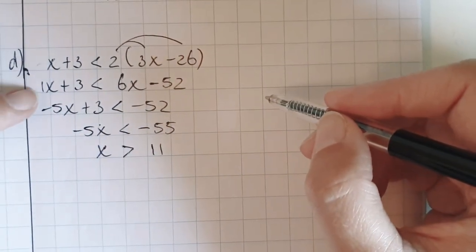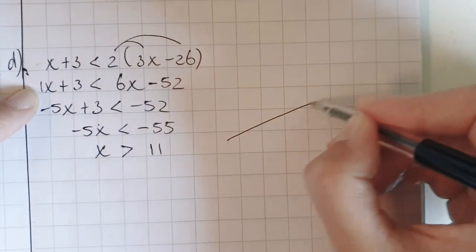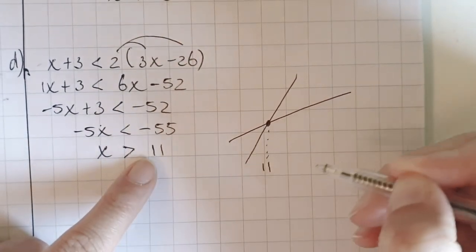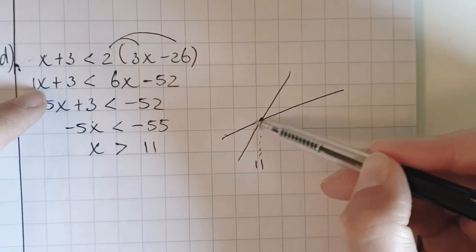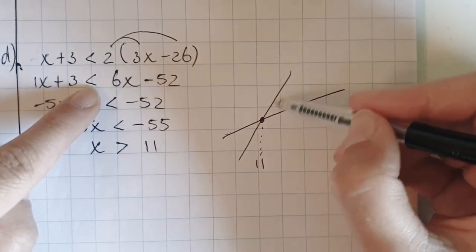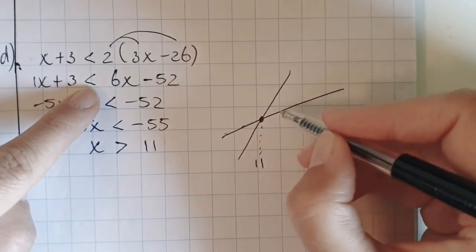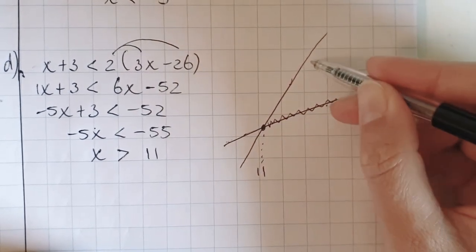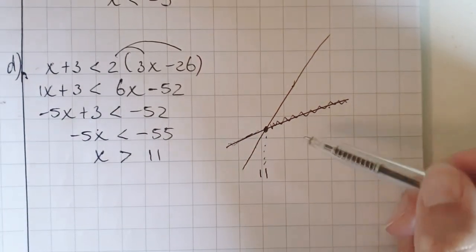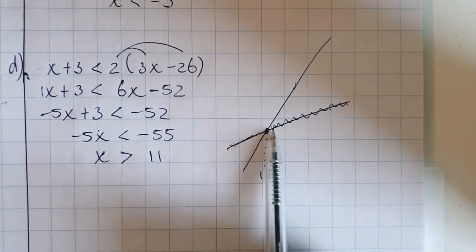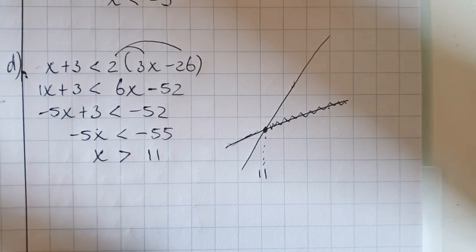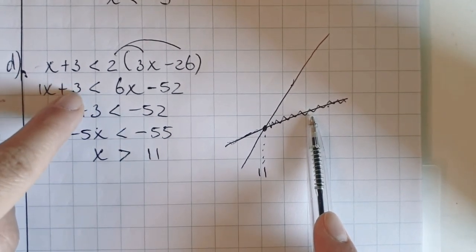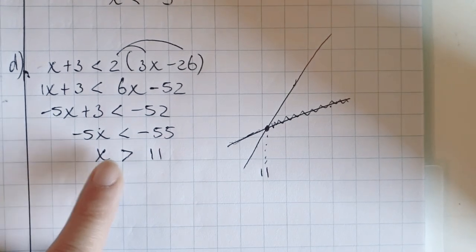Let me show it to you in a picture. This is a line that goes up a little bit slow, and this is a line that goes up as well, but a little bit faster. This is the intersection point at 11. The question was: when is the line that goes up slow smaller than the line that goes up a little bit faster? I believe that's here — here it's lower than this line. And here this is higher, greater than the other one. So everything from the intersection point on: to the right is greater and to the left is smaller. So from 11 on, this graph is indeed smaller than the other graph. So yes, x is greater than 11 is correct.